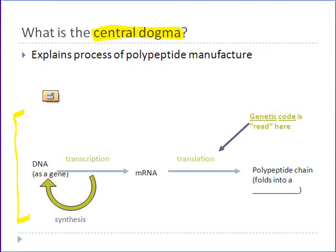The central dogma of biology is basically the description of the series of events that occur inside a cell to manufacture a protein. This series of events is more or less identical whether it's happening inside a human cell, a plant cell, or a bacterial cell. How this works is you start out with DNA — specifically a segment of DNA which codes for a particular protein, called a gene.